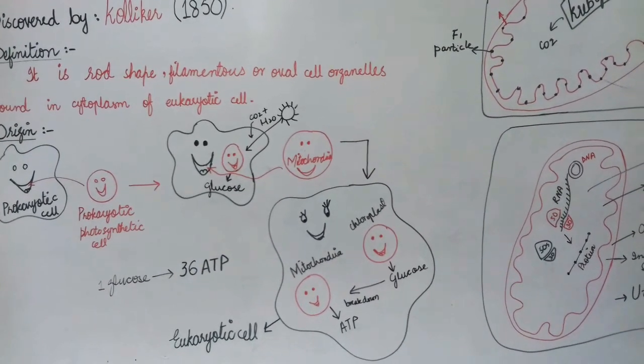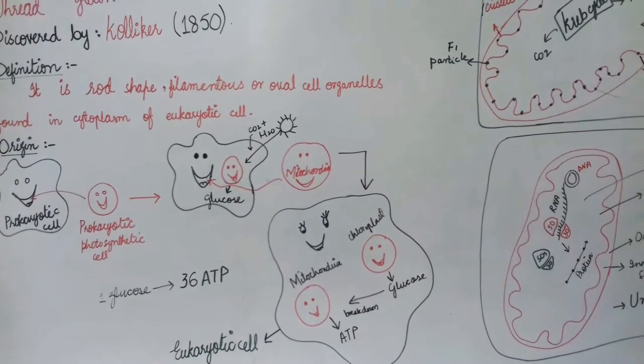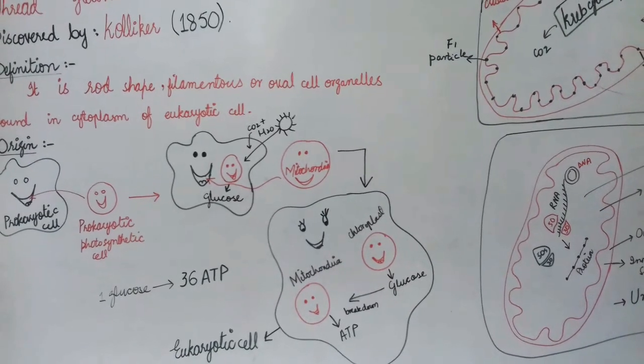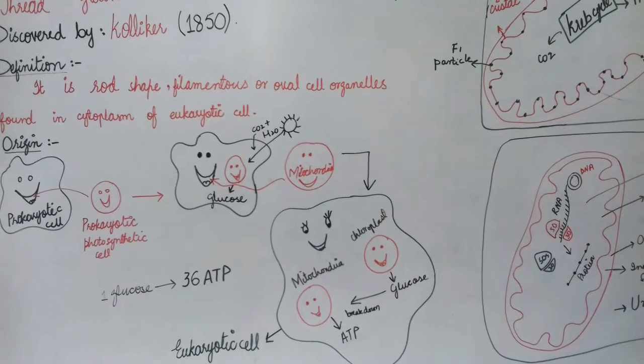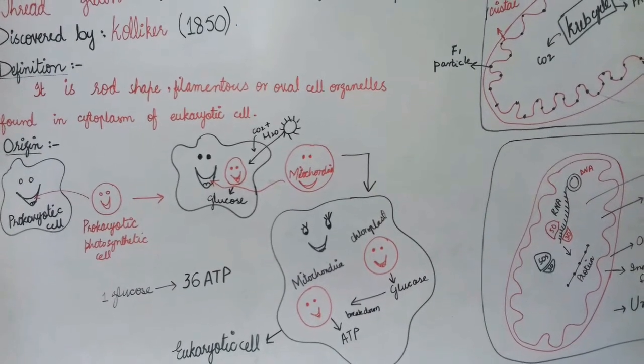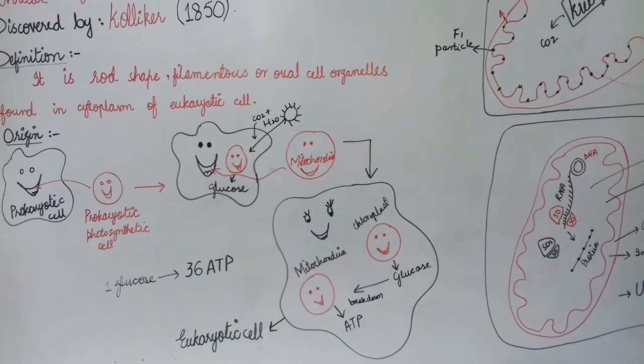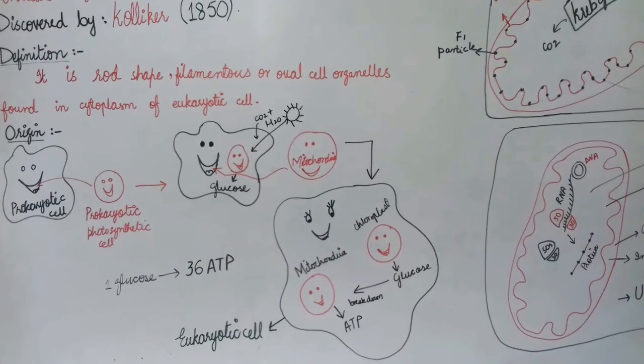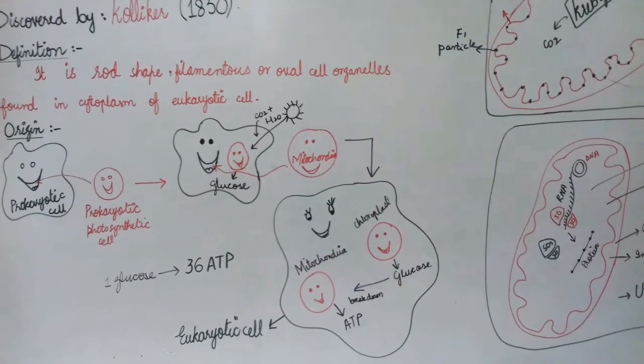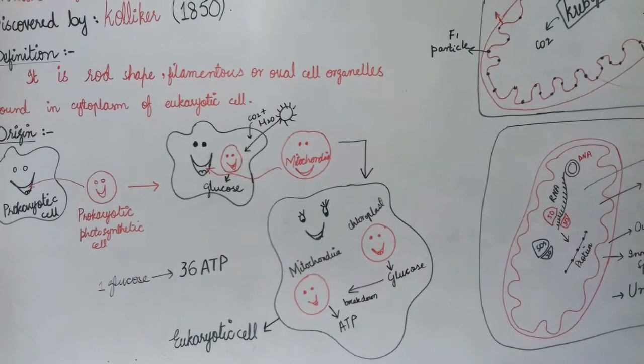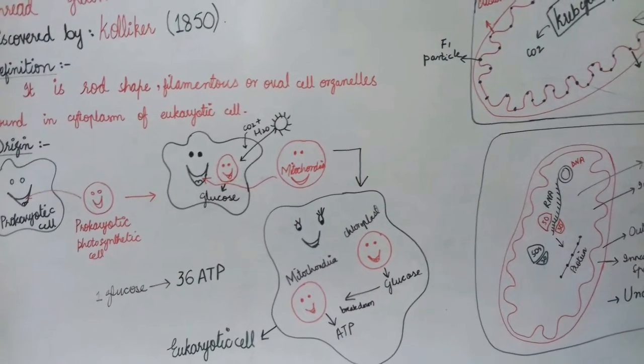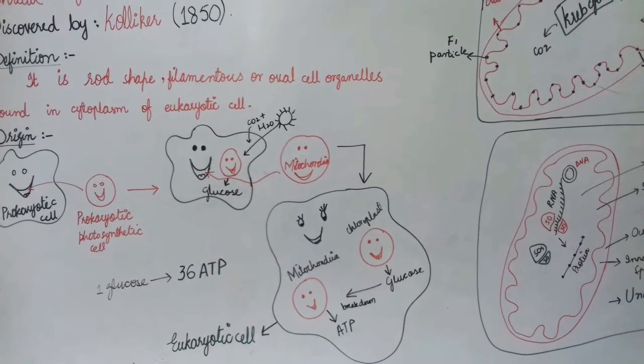Later on, mitochondria—which originally was a flagellated bacterium—was also engulfed. So the prokaryotic cell that engulfed two prokaryotic cells changed to a eukaryotic cell. Why? Because the prokaryotic cell definition is no membrane-bounded organelles are present.